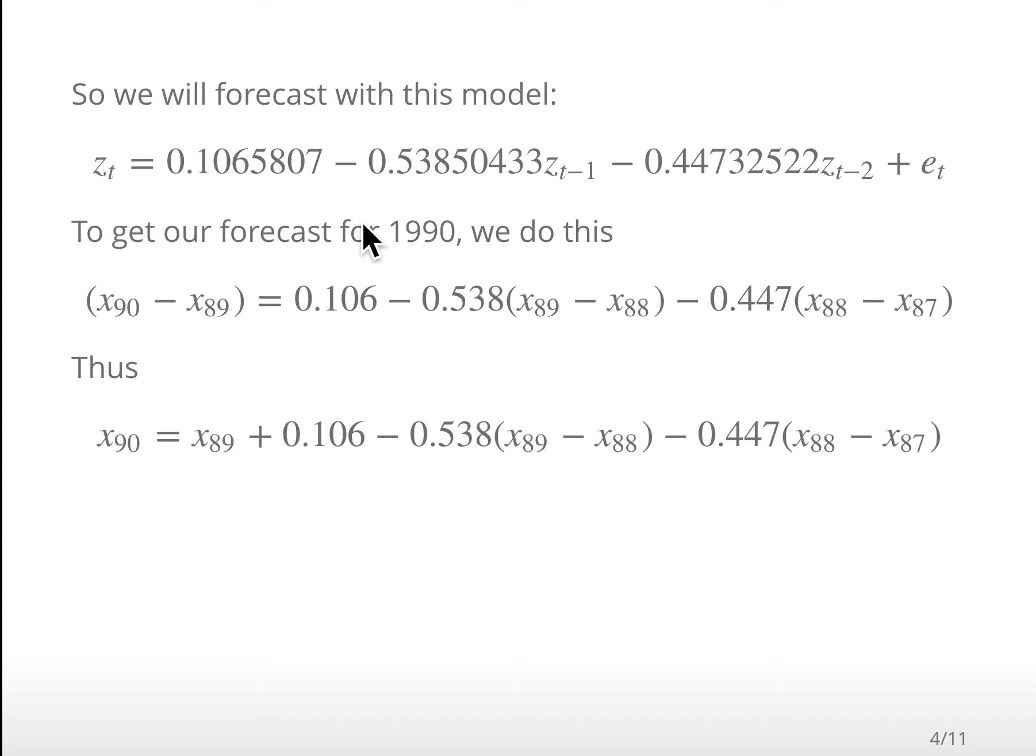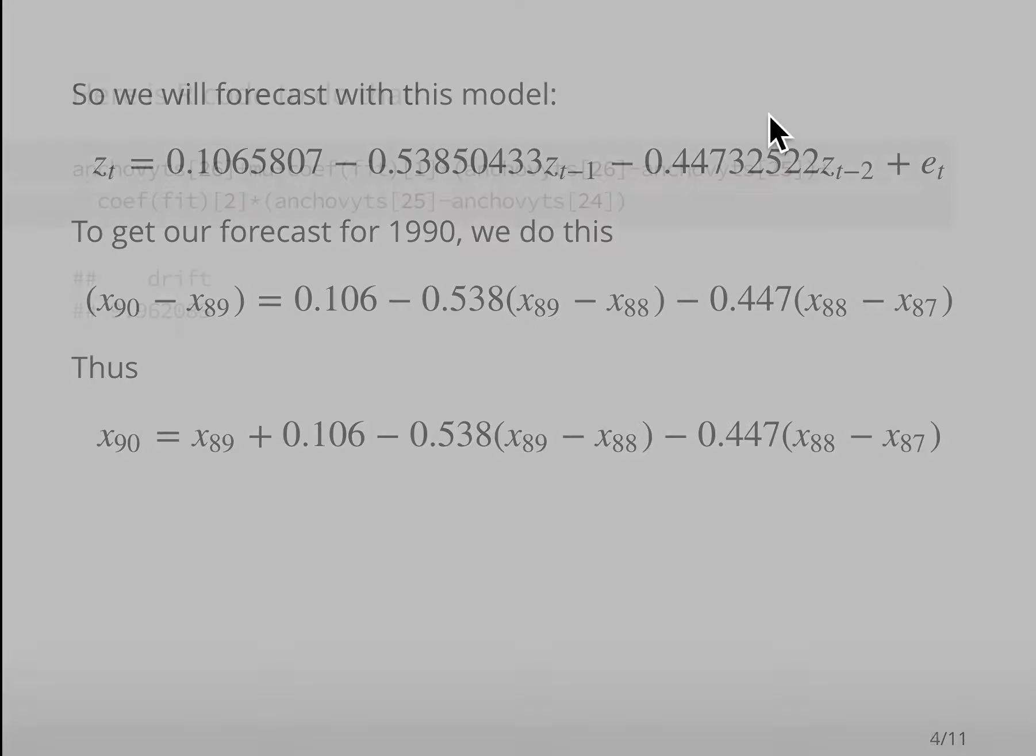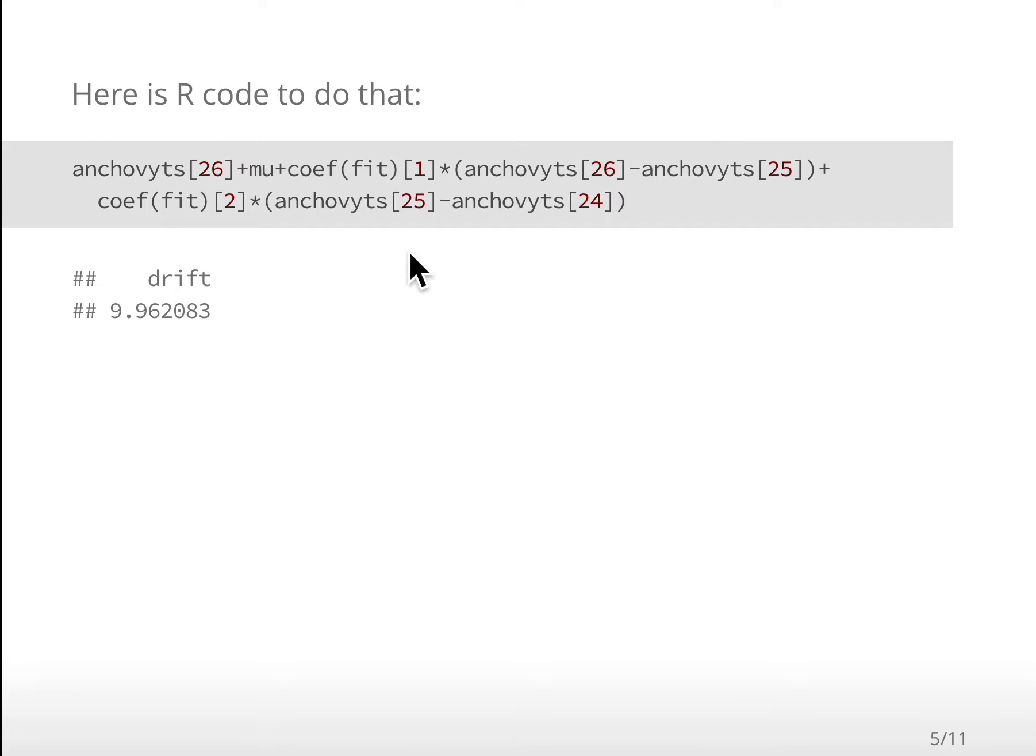Now that we have those, we can forecast with this model. We've got our mu, phi 1, and phi 2. If we want to get z at the next value, all we have to do is stick in that difference there and that difference there. It's a bit of algebra, but we can definitely do it. In code, it would look like this - this would be that first forecast.